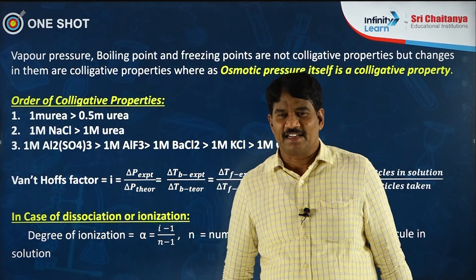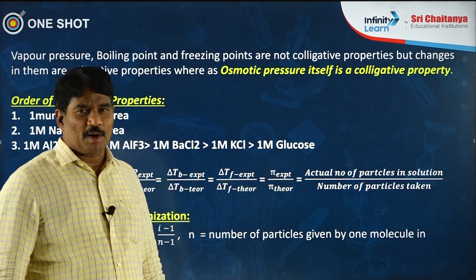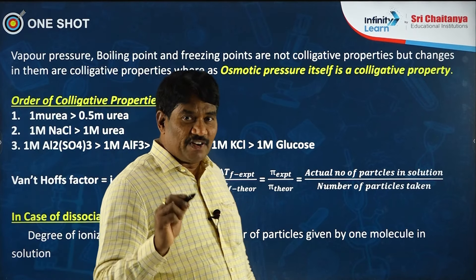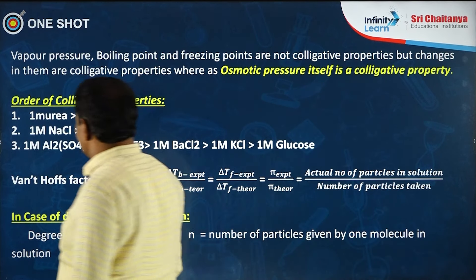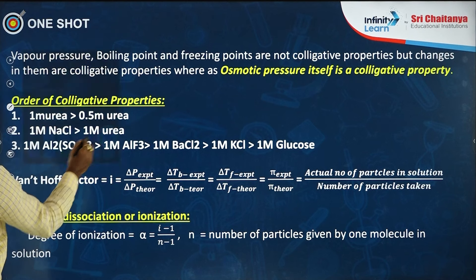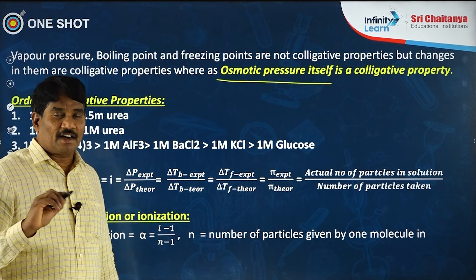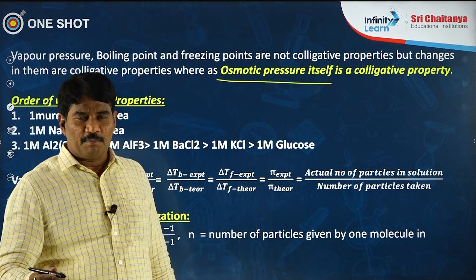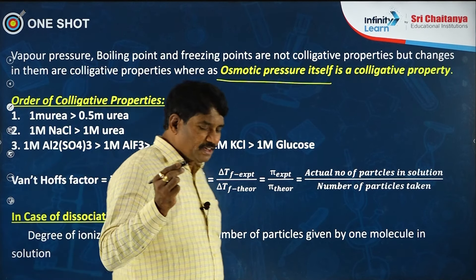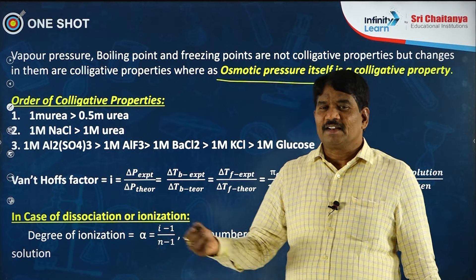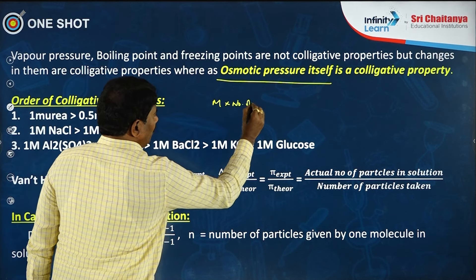Yesterday we discussed ideal solutions, non-ideal solutions, and concentration methods. Today we will be discussing colligative properties. Remember: vapor pressure, boiling point, and freezing point are not colligative properties — the changes in them are. Osmotic pressure itself is a colligative property. All colligative properties are directly proportional to molarity multiplied by the number of ions given by one molecule on ionization.